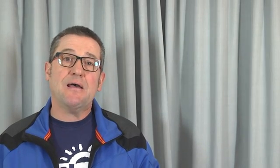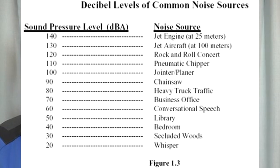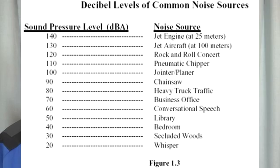Sound is movement of air. So we will be measuring this by measuring the SPL, the Sound Pressure Level. Here are some examples of sound pressure levels, varying from 20 decibels to 140 decibels.